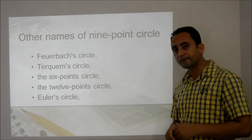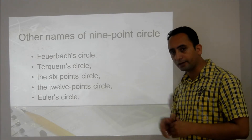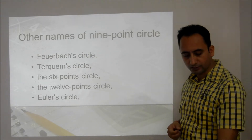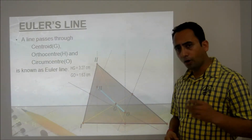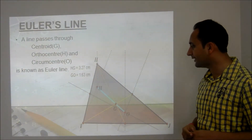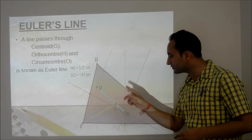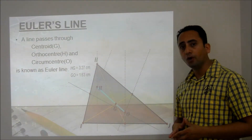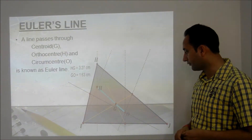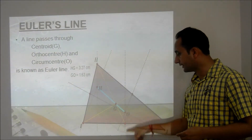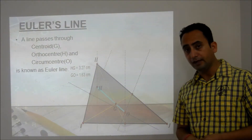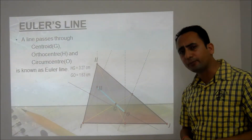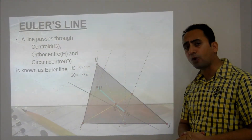The 9-point circle is also known as Euler's circle. Euler's line is a line which passes through the centroid G (point of intersection of medians), the orthocenter H (point of intersection of altitudes), and the circumcenter O (point of intersection of perpendicular bisectors). Euler proved that these 3 points are collinear, which is why this line is known as Euler's line.